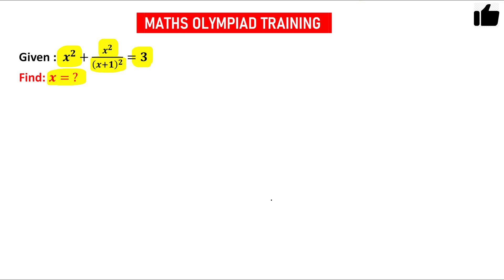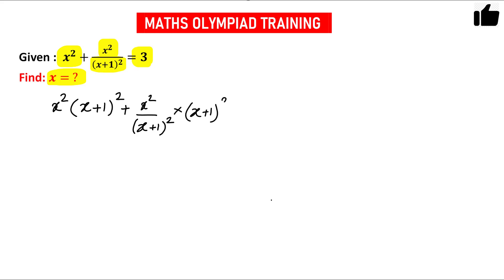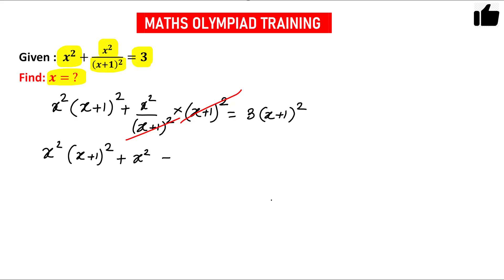How will you solve this problem? Let us multiply both sides by (x+1) whole squared. So we will have x squared times (x+1) whole squared, plus x squared divided by (x+1) whole squared, multiplied by (x+1) whole squared, equals 3 times (x+1) whole squared. This cancels out, so we have x squared times (x+1) whole squared plus x squared equals 3 times (x+1) whole squared.